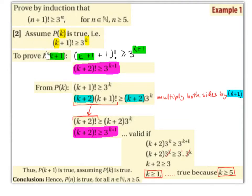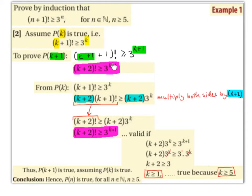We want to prove P(k+1), that is (k+1+1)! ≥ 3^(k+1). We've swapped k for k+1 in both places. Since 1+1 = 2, this becomes (k+2)! ≥ 3^(k+1).